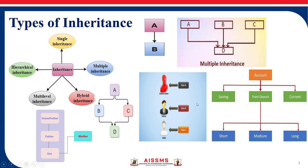Then we have hierarchical inheritance: one base class with multiple derived classes. And we have hybrid inheritance, which is a combination of all the other types of inheritance.